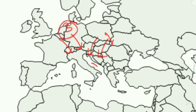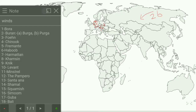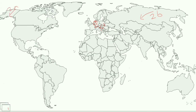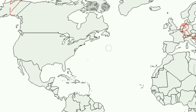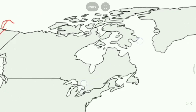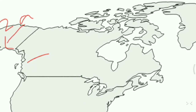Next is Chinook, which is a Foehn-type wind. It blows in the interior west of North America. On the map it blows here, and we write 4 for Chinook.